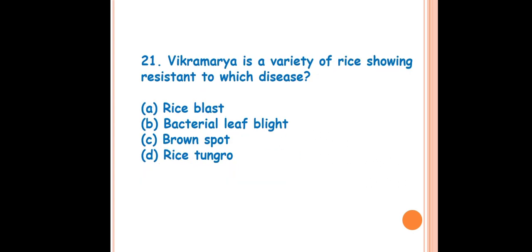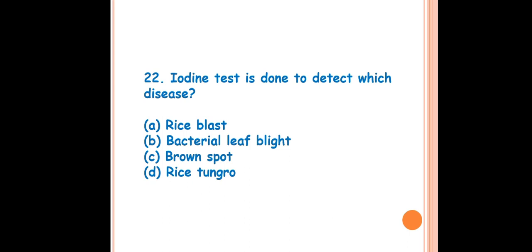Question 21: Vikramarya is a variety of rice showing resistance to which disease? The answer is D — rice tungro disease. Vikramarya is a resistant variety that imparts resistance against rice tungro disease. Question 22: Iodine test is done to detect which disease? The answer is D — rice tungro disease. The iodine test is conducted to detect, identify, or confirm rice tungro disease.